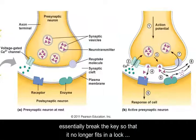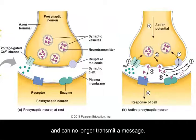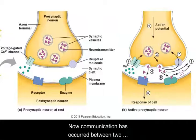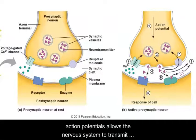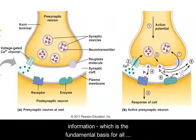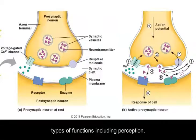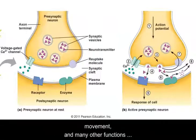And now communication has occurred between two neurons. This form of communication, combined with action potentials, allows the nervous system to transmit information, which is the fundamental basis for all types of functions, including perception, emotions, thought, movement, and many other functions carried out by the nervous system.